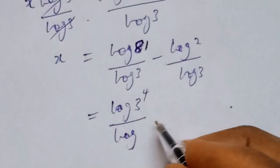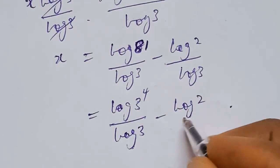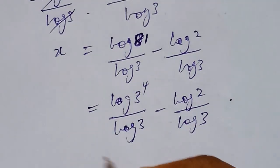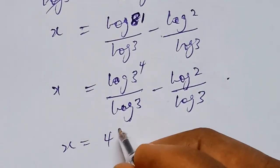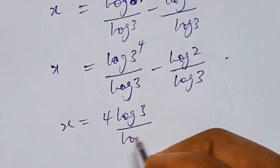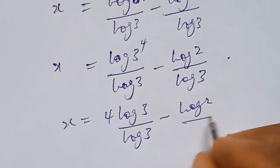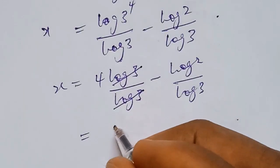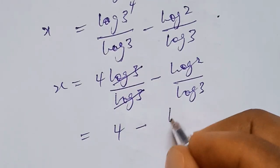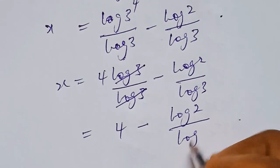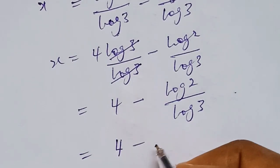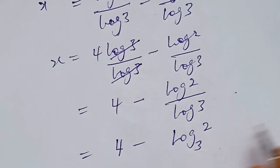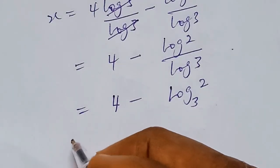Applying our earlier power identity, 4 times log 3 over log 3 simplifies to just 4, since log 3 cancels log 3. So we have x equals 4 minus log 2 over log 3, which by the change-of-base identity equals 4 minus log base 3 of 2.